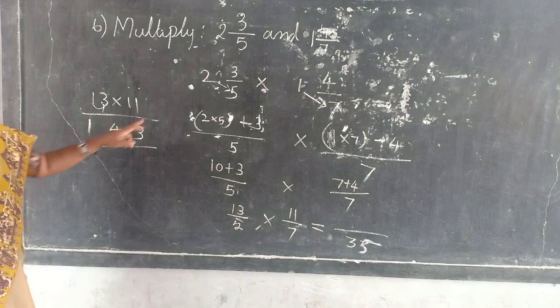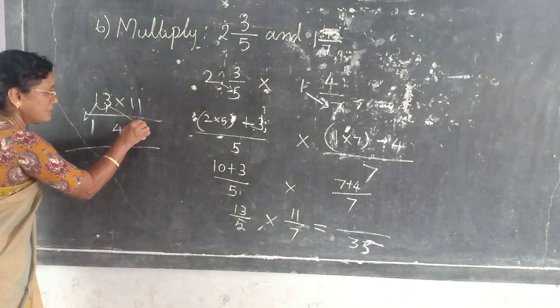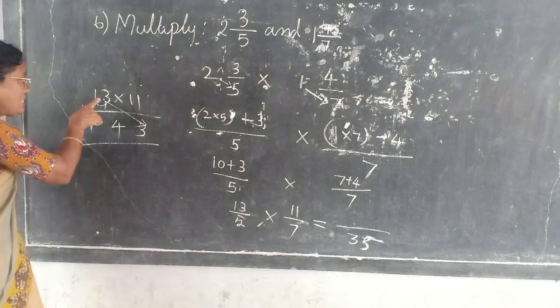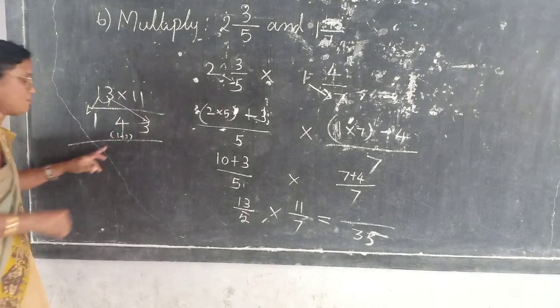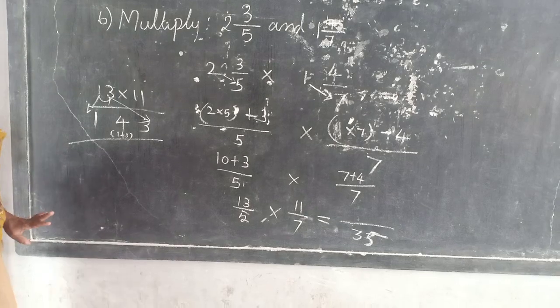Do you follow? 13 into 11. You write this number as it is. This also. You can add these two digits. 1 plus 3. This is nothing but 1 plus 3. What is it? 4. So 143.